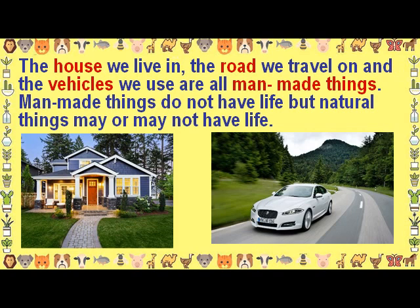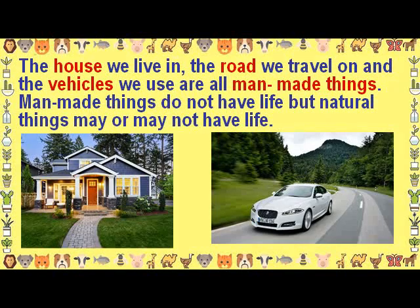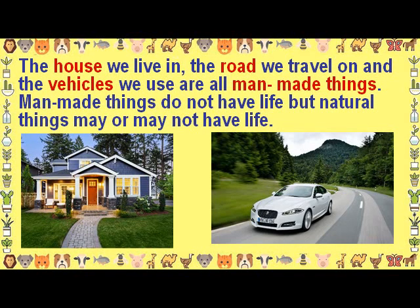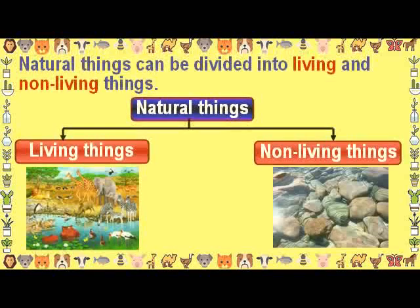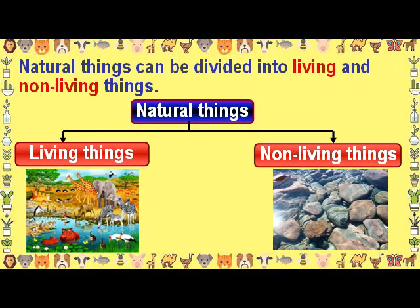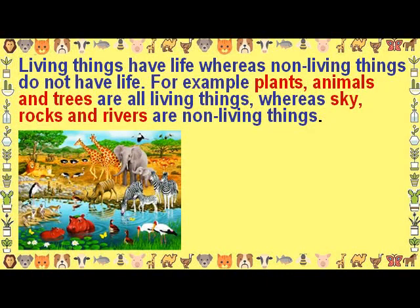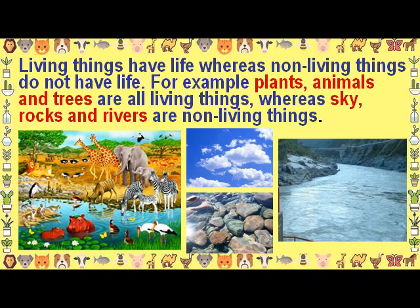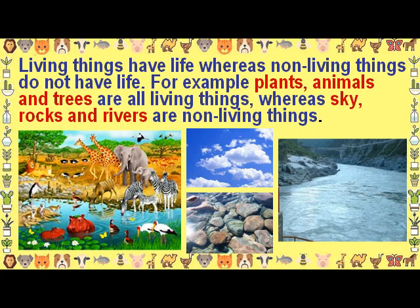Man-made things do not have life, but natural things may or may not have life. For example, plants, animals, and trees are all living things, whereas sky, rocks, and rivers are non-living things.